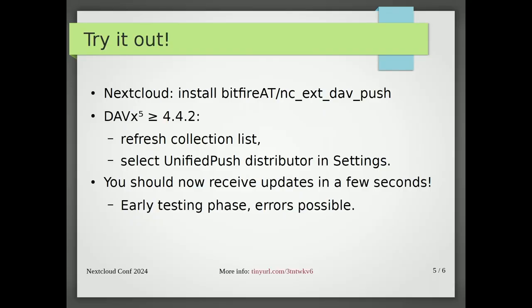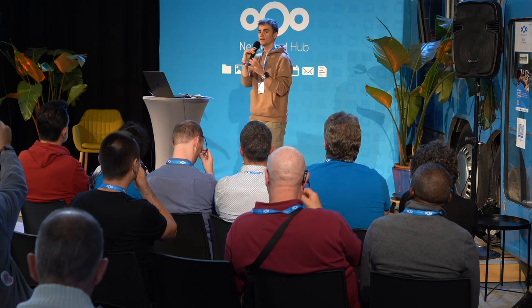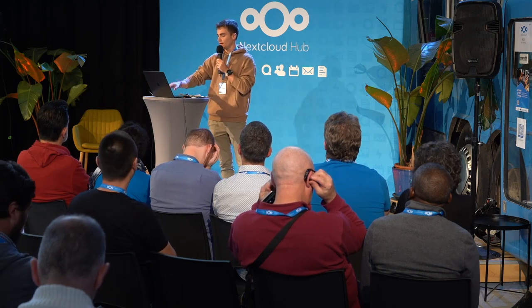Now, the most interesting thing for today: how can you try it out? It's very easy. First, you can access the Nextcloud App Store, search for DAVPush, and it's there — just install. That's all you have to do on the server side. Then you have to access your client — in this case DAVEx 5. Make sure you are using at least version 4.4.2. Then the only thing you have to do is refresh the collections list so that DAVEx 5 knows that you have installed this application on Nextcloud. Then go to the settings in DAVEx 5 and select your UnifiedPush distributor. If you don't know about this, you can search for UnifiedPush and it's well explained there, but it will most likely already be selected automatically. And that's all — it's really easy. It will be working right now.